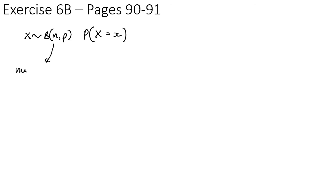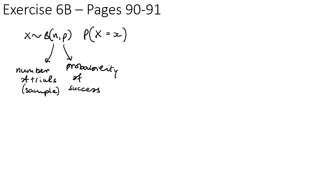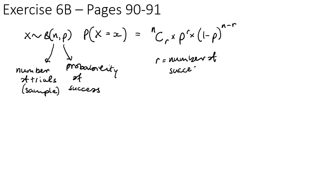You should now be able to do exercise 6b on pages 90 to 91. Remember the formula for the binomial distribution: n is the number of trials or sample size, p is the probability of success, and P(X=r) = nCr × p^r × (1-p)^(n-r), where r is the number of successes such as the number of left-handed people or number of tails.